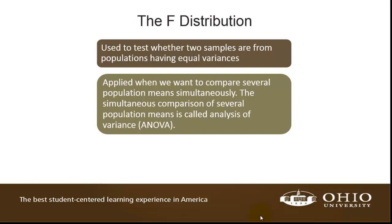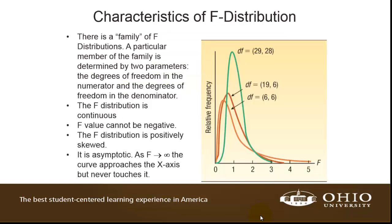We're going to look at two specific uses for the F distribution. The first is to test whether or not we believe that the variances of two populations are equal. The second application is used in analysis of variance to compare the means of several different populations. Note that the F distribution is always positive, is skewed to the right, gets close to the x-axis but doesn't really touch it, and it has two different parameters: the degrees of freedom for the numerator and the degrees of freedom for the denominator.